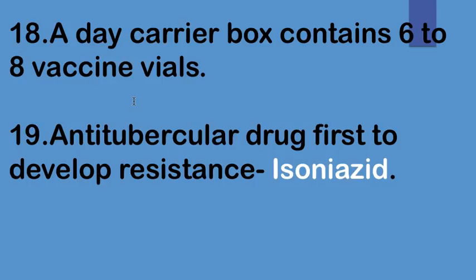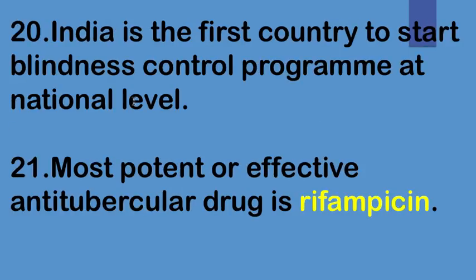In anti-tubercular drugs, isoniazid is the first to develop resistance. India is the first country to start a blindness control program at the national level. Rifampicin is the most potent or effective anti-tubercular drug.